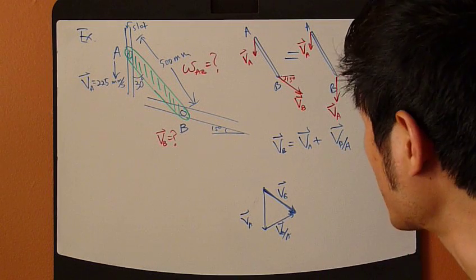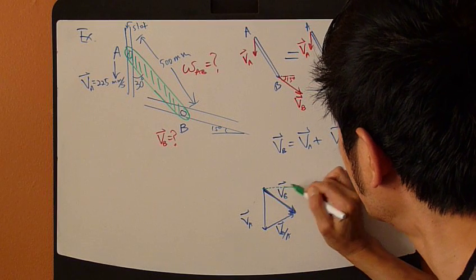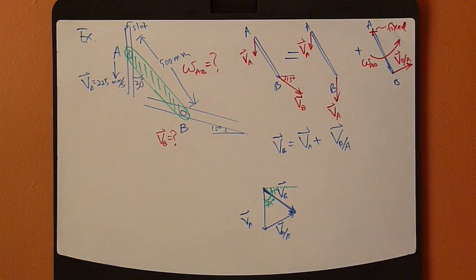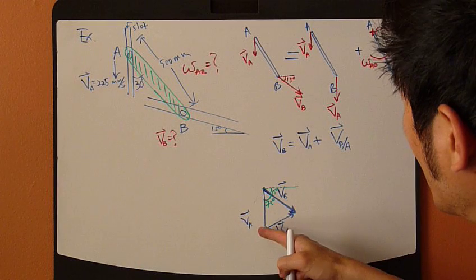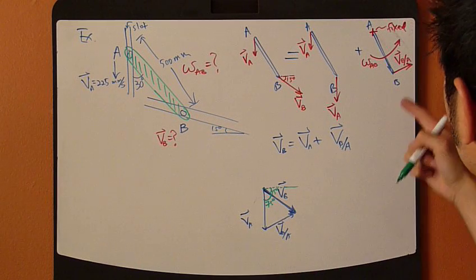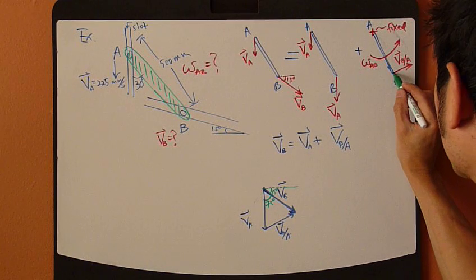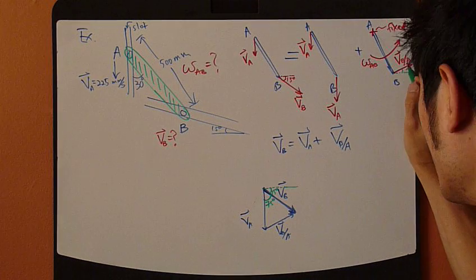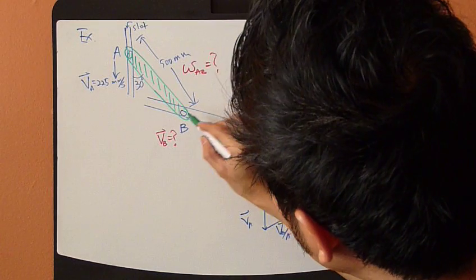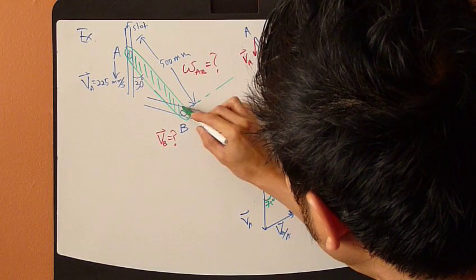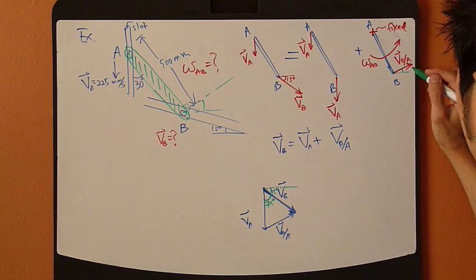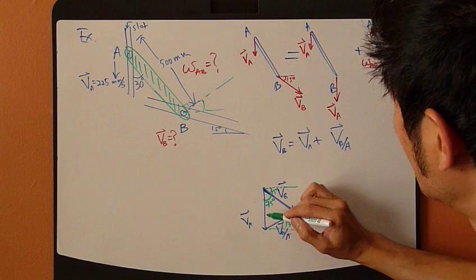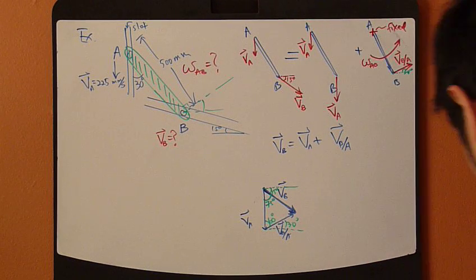And you know this angle, which is 15 degree angle, which means that this angle is 25, right? And then, for this vector right here, B/A, and again, you know that since this makes a 30 degree angle, so VB/A, which is right here, so this is the same as that angle, which is 30 degrees, which means this is 60 degrees.